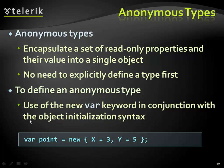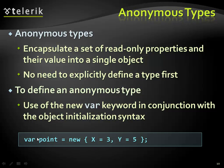For example, this 'point' object will be initialized to an anonymous type with two properties, X and Y. We're actually getting a point here with two properties without defining anything, without creating a class — just like that. We're using the 'var' keyword, which is mandatory here. There is another use for the 'var' keyword — if you're a lazy programmer and you don't want to type the full type name, you can write 'var'. Personally I don't like it, but many people do. In this case, 'var' is mandatory because this is how we define an anonymous type.